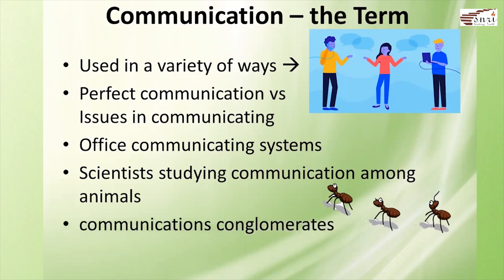We also have something called communications conglomerates — these refer to certain organizations that deal with publishing newspapers, books, magazines, or organizations that own radio and television stations. In simple words, it could mean an organization that holds many different things within itself. A perfect example could be an enterprise which has various other branches or organizations working for the same purpose.